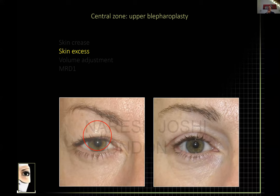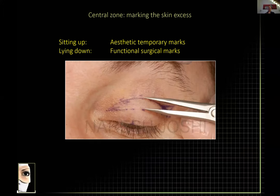The next thing I look for — and most patients are concerned with this — is skin excess and hooding. If you're going to take skin away, you need a robust and safe way of marking. There are two types of markings I usually describe to fellows: what I call the aesthetic marking, which is temporary, and the functional marking, which is permanent or surgical.